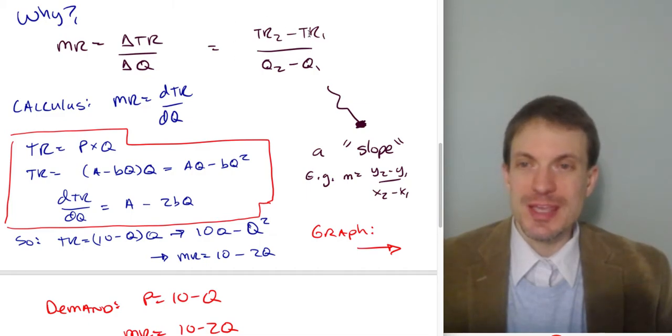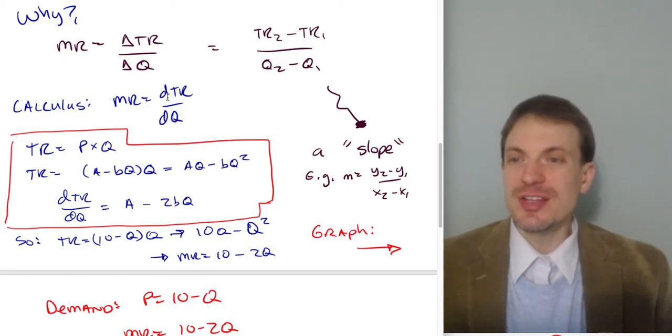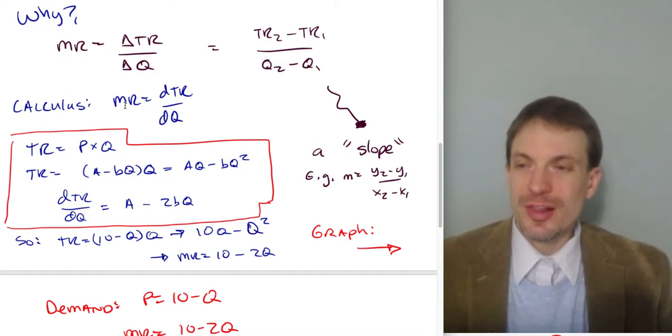The distance being infinitesimally small, like infinitely small. And then we'll replace this delta with a D for like a calculus D. So I have dTR/dQ. This is telling us marginal revenue. Remember, it's just the derivative of total revenue with respect to quantity.